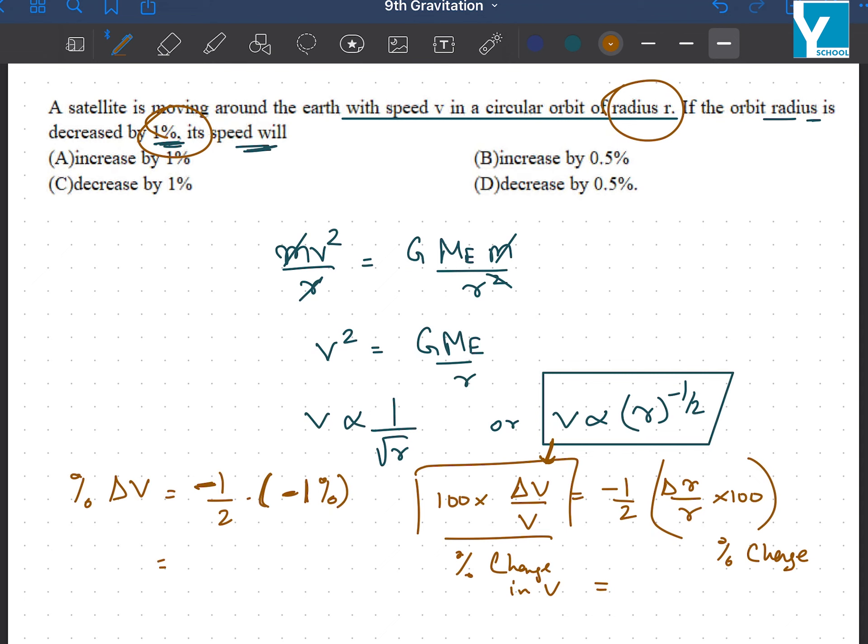And if the radius was increased, the velocity would have decreased. Right now, these minuses will cancel out and the answer will be half a percent, 0.5%. And it's positive, so that is going to be an increase of 0.5%.